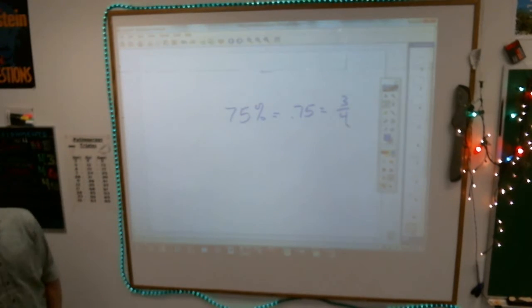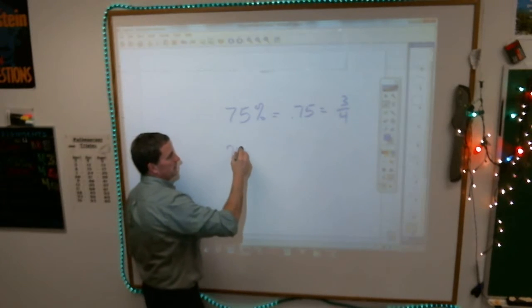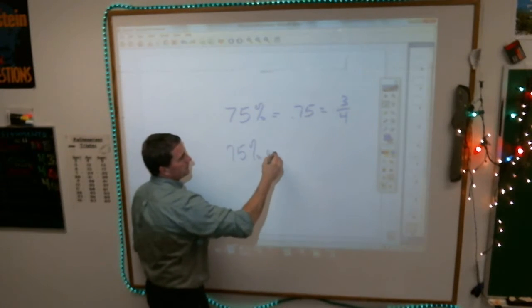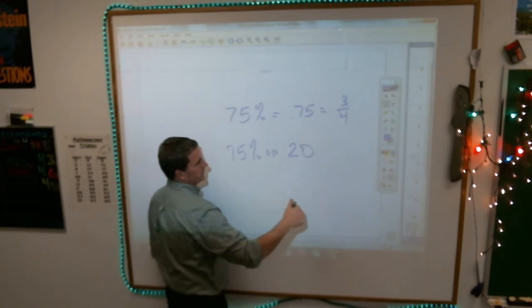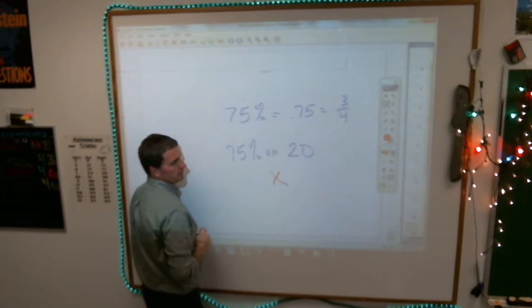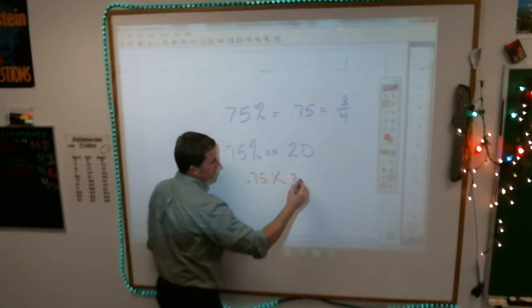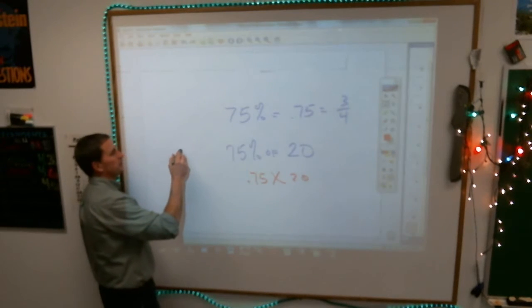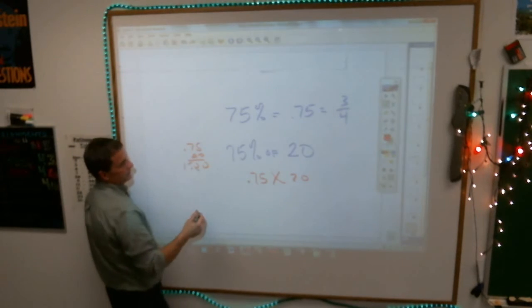Okay, those are your two choices there. If I asked you to find 75% of 20. First thing you need to understand is that the word of is times. If I make this a decimal, I have to multiply 0.75 times 20. So 0.75 times 20, that's 15.